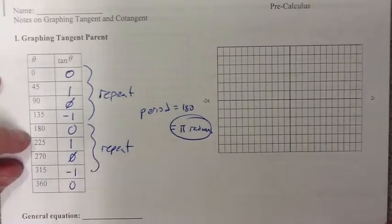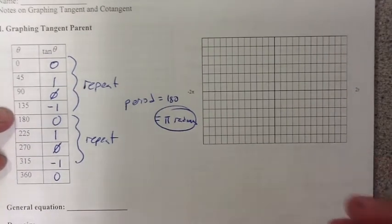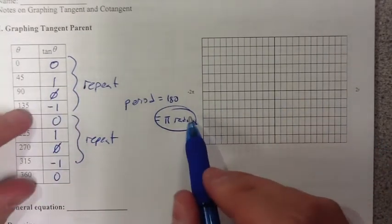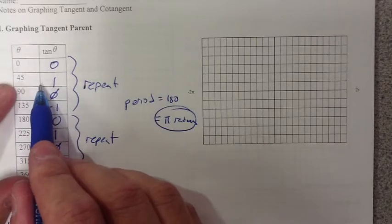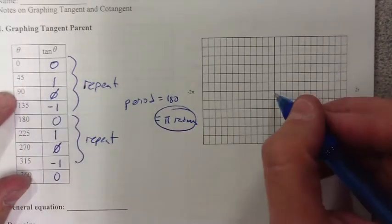Tangent has a different period than what we're used to. To graph tangent, something very easy to do is know where the asymptotes are. With tangent, you're going to graph the asymptotes, which are at π/2's.